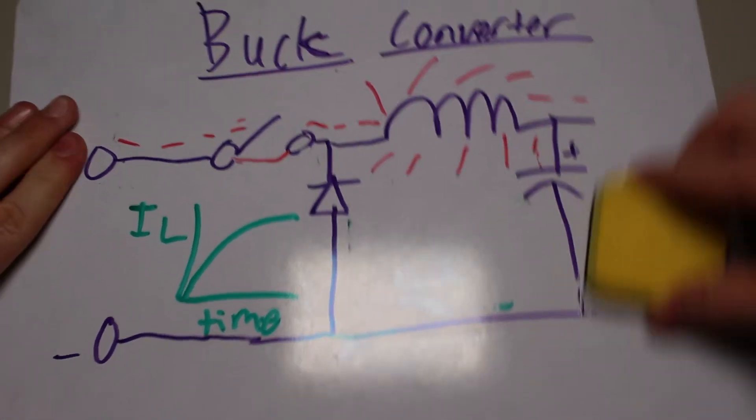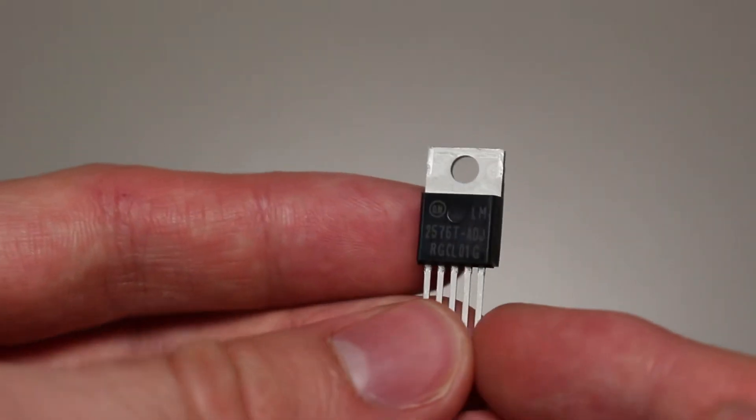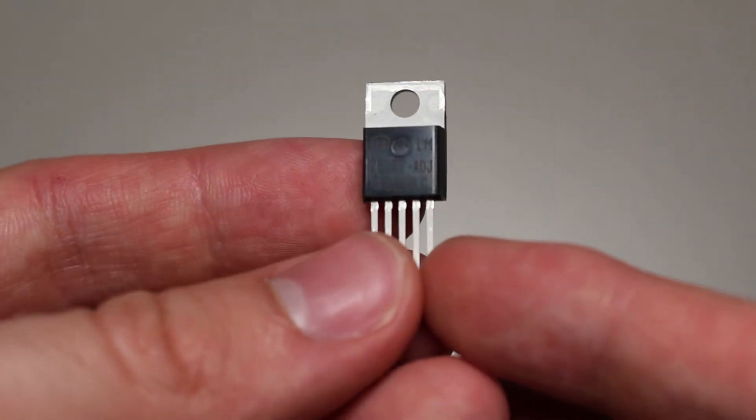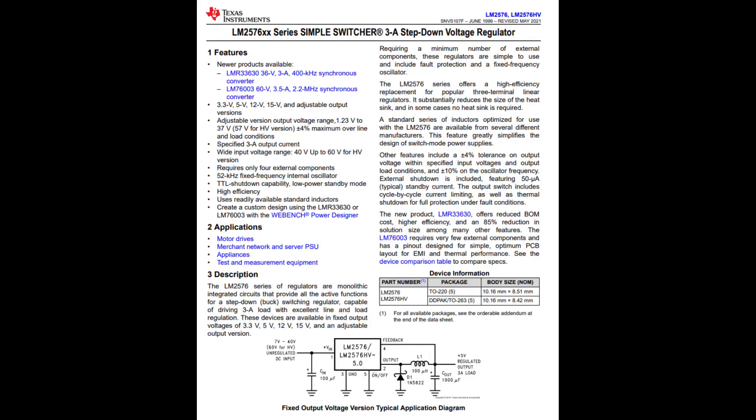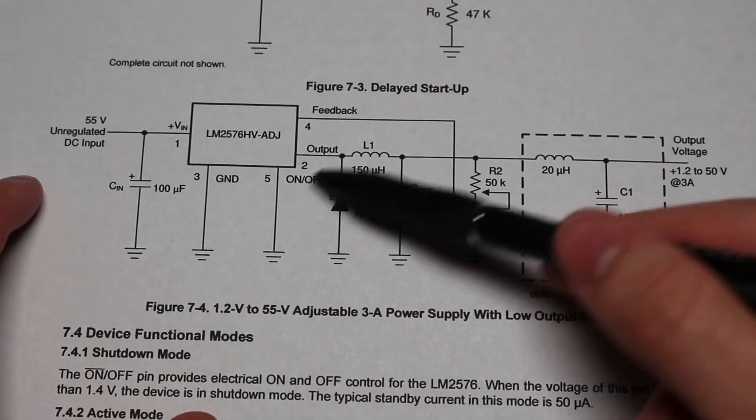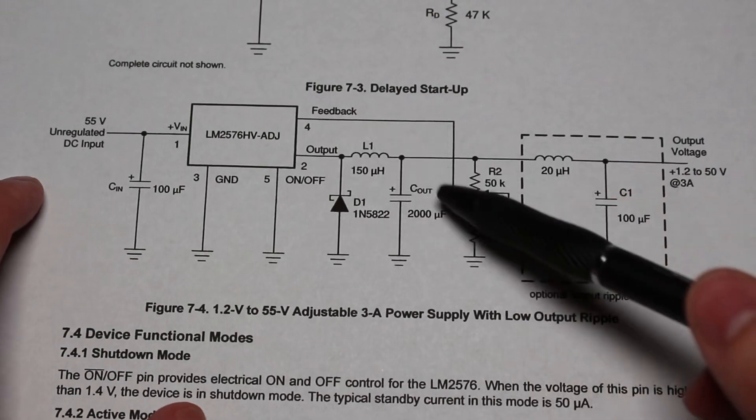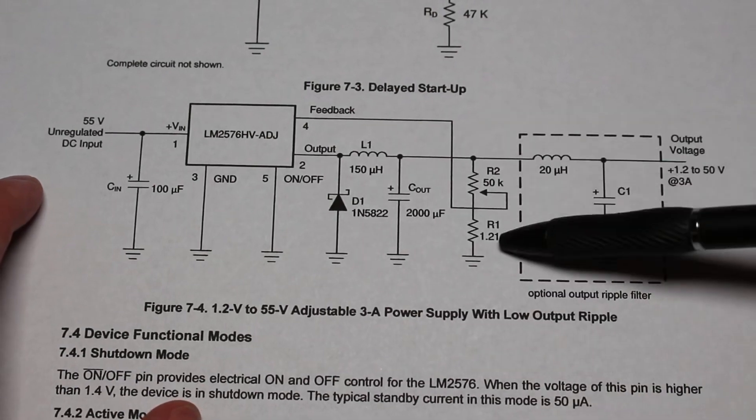To get a real-world example of a buck converter, I got this LM2576-ADJ IC, which is a 3 amp step-down regulator. This IC functions as a switch in this type of circuit. Taking a look at Figure 7-4 in the datasheet, we can see that it looks a lot like the basic circuit we were just talking about.